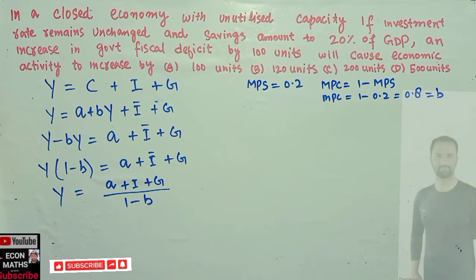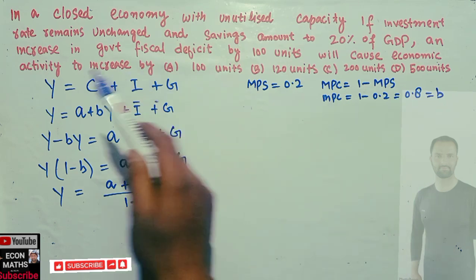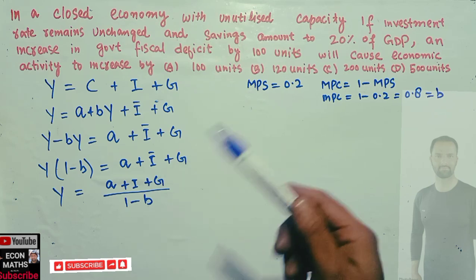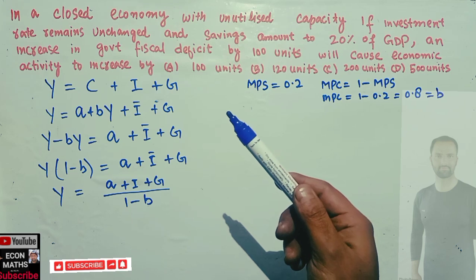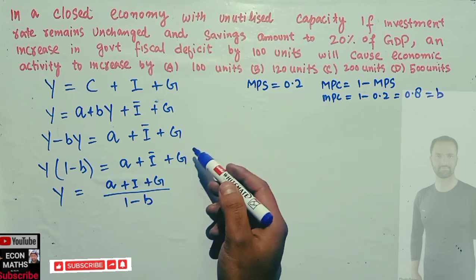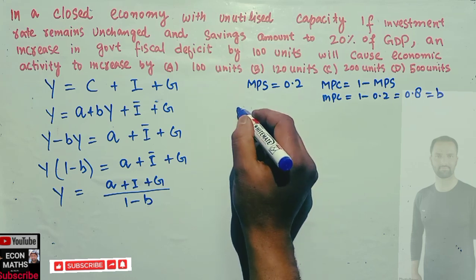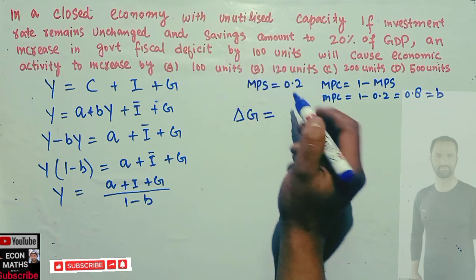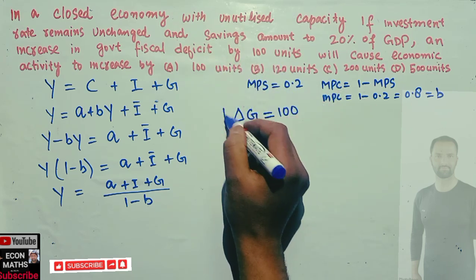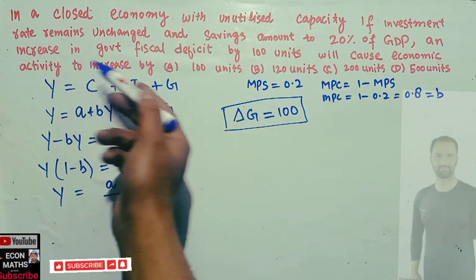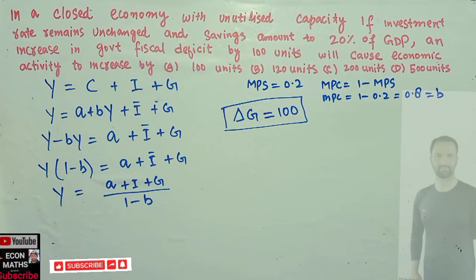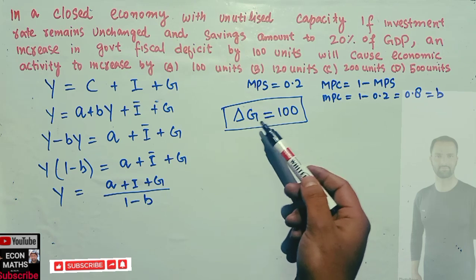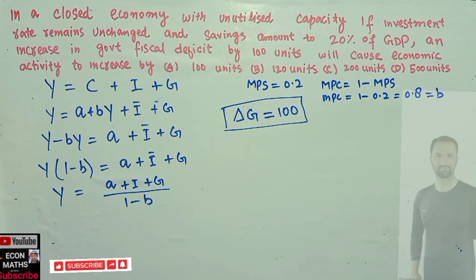The question asks what happens when there is an increase in government fiscal deficit. The fiscal deficit increases when government expenditure increases. Here we are told that the change in government expenditure ΔG equals 100 units, meaning government expenditure has increased, which represents an increase in government fiscal deficit. We need to find what happens to GDP when government expenditure increases by 100 units.